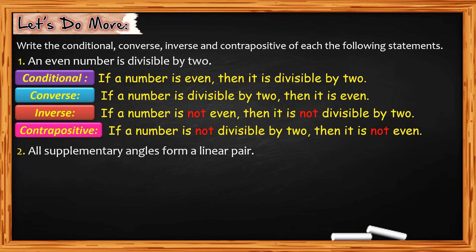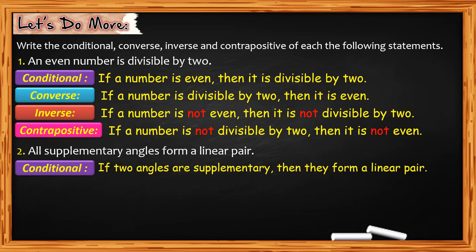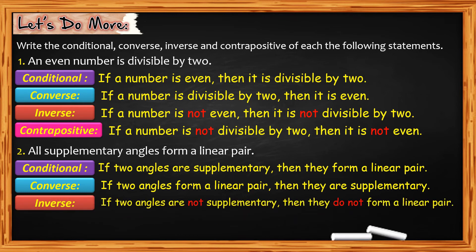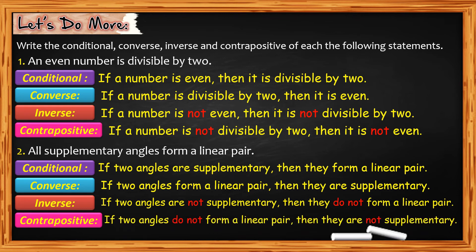For number 2: all supplementary angles form a linear pair. For the conditional: if two angles are supplementary, then they form a linear pair. For the converse: if two angles form a linear pair, then they are supplementary. For the inverse: if two angles are not supplementary, then they do not form a linear pair. For the contrapositive: if two angles do not form a linear pair, then they are not supplementary.